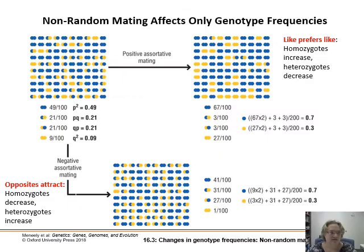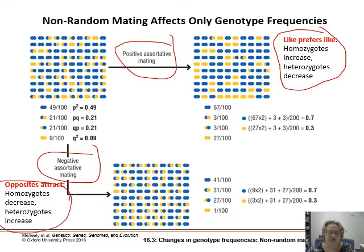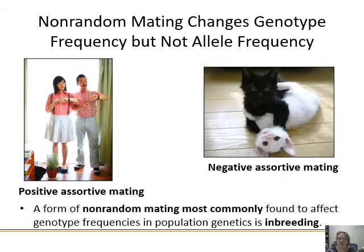Non-random mating only affects genotype frequencies — it's not going to affect alleles. If like prefers like, you see more homozygotes and fewer heterozygotes — that's positive assortative mating. Whereas with negative assortative mating, where opposites attract, you see a lot more heterozygotes in the population. But the allele frequencies are remaining the same, as shown here with positive and negative assortative mating.